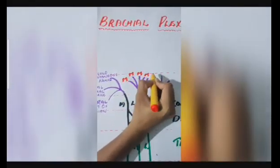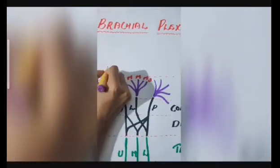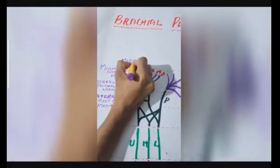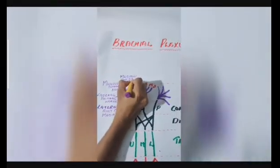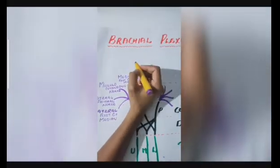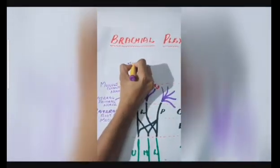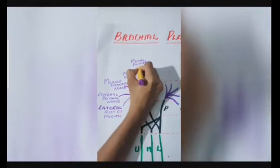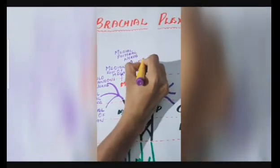The medial cord splits into 5 branches namely the medial root of median, the medial pectoral nerve, the medial cutaneous nerve of arm, the medial cutaneous nerve of forearm and the ulnar nerve.